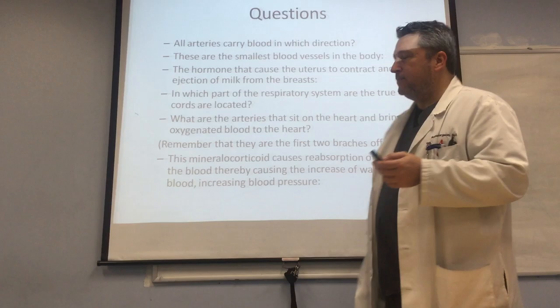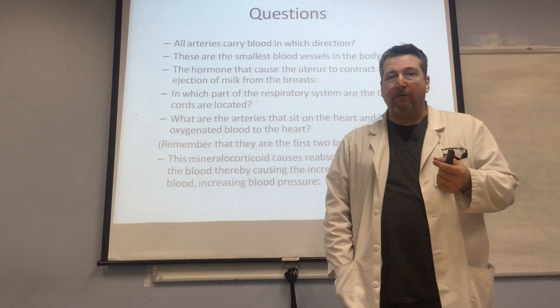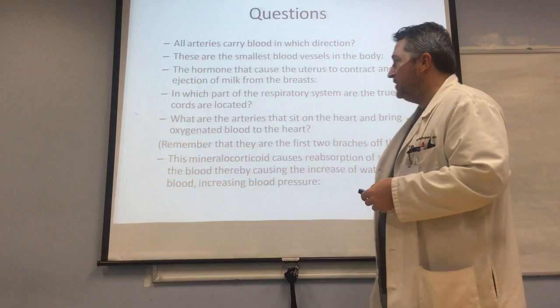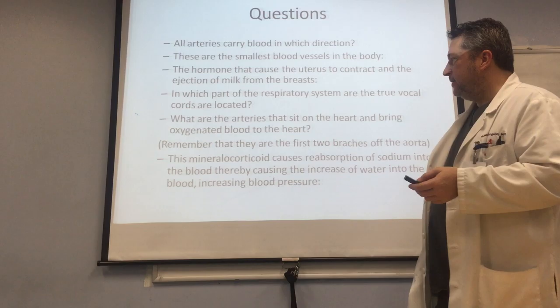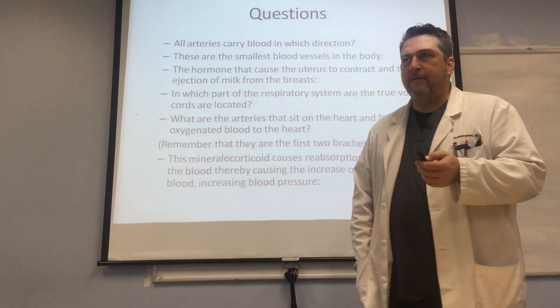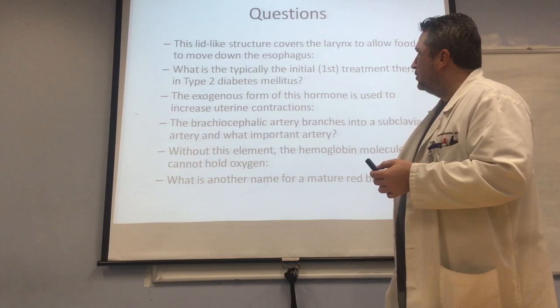What are the arteries that sit on the heart and bring oxygenated blood to the heart? Those are the coronary arteries — the first two main branches off of the aorta — and these bring oxygenated blood to the heart itself so those cells can get the nutrients they need. This mineral corticoid causes the reabsorption of sodium into the blood, thereby causing an increase of water in blood, which increases blood pressure. This is a mineral corticoid coming from the adrenal cortex, and this would be aldosterone.